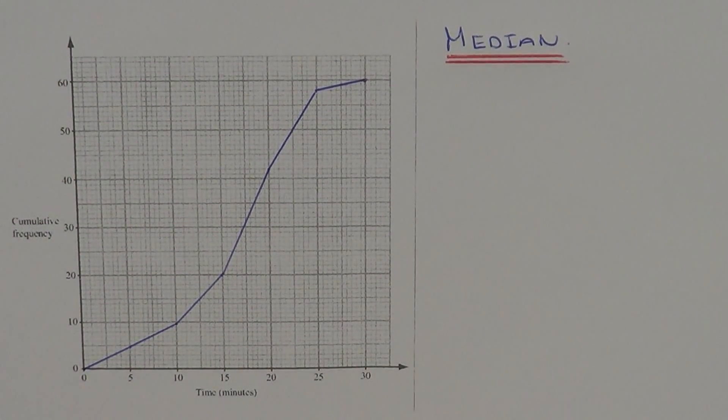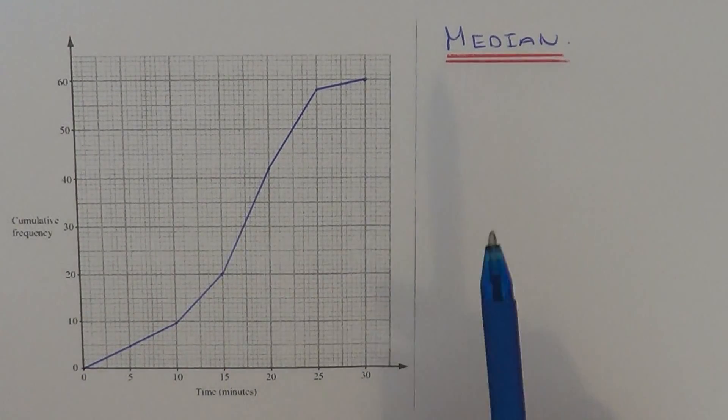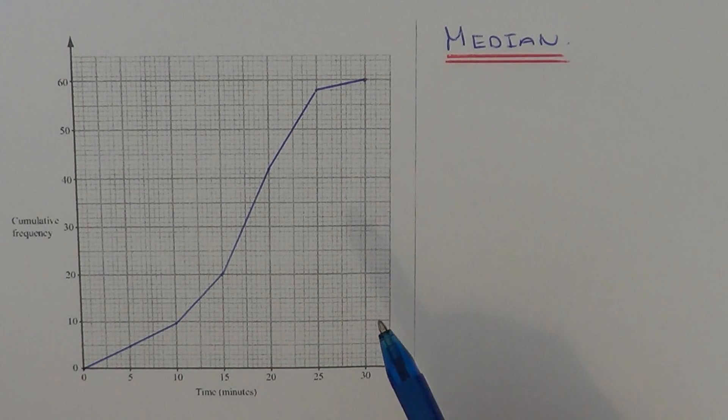Today I'm going to show you how to work out the median from a cumulative frequency graph. In this example, we've got a cumulative frequency graph on the times it takes for a group of runners to complete a race.